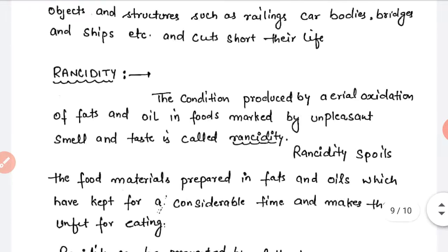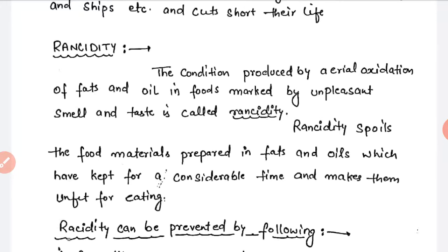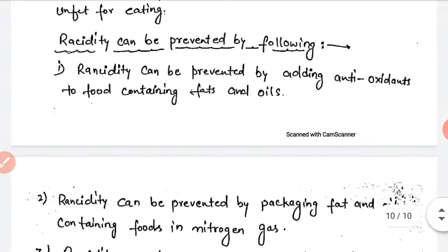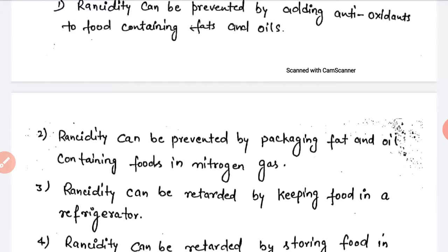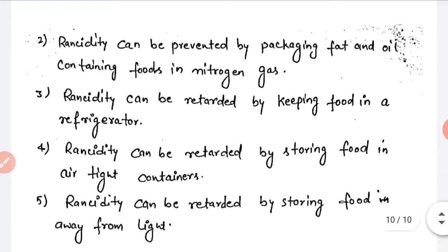The next topic is rancidity. Rancidity is the condition produced by aerial oxidation of fats and oils in foods, marked by unpleasant smell and taste — in simple words, the food has gone bad. Rancidity can be prevented by the following methods: adding antioxidants to food containing fats and oils, using nitrogen gas packaging, and keeping food in a refrigerator.